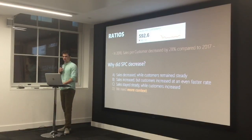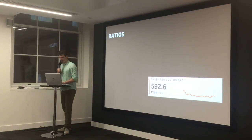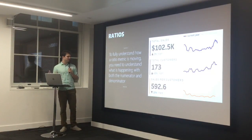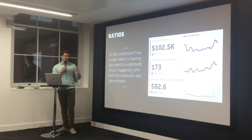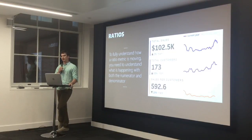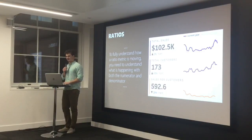Whenever I'm dealing with a ratio metric, I like to also show what's happening within the numerator and denominator. A simple addition of those other metrics — sales and customers — lets us understand why it's going up or down. Here you can see sales per customer went down because total customers went up 43% while total sales only went up 2%. It's not as simple as saying sales per customer is going down meaning sales aren't improving — here they actually are improving, but customers grew more.